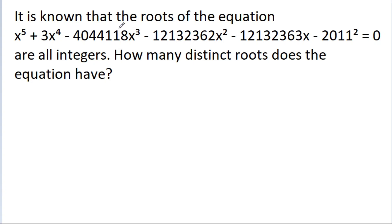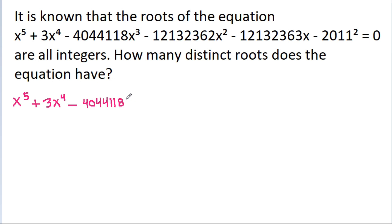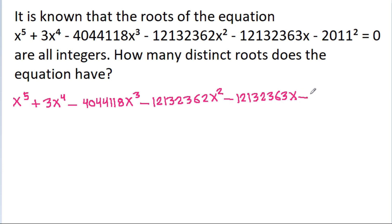In this video, we have given that the roots of the given equation are all integers, then we have to find how many distinct roots does the equation have. The given equation is x⁵ + 3x⁴ - 4044118x³ - 12132363x - 2011² equal to 0.